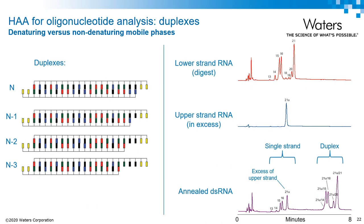In this example, HAA is used to resolve RNA duplexes. A full-length upper RNA strand and partially digested lower RNA strand were annealed to form the duplexes shown on the left, with the associated chromatography of the individual strands on the right. From the truncated lower strand, a ladder of N-1, N-2, etc. species are formed. From the chromatography on the bottom right of the annealed duplex, we can see that HAA successfully resolves the duplex-containing deletion sequences from the full-length duplex. MS was used in this case to further confirm the elution order of the failed sequences.